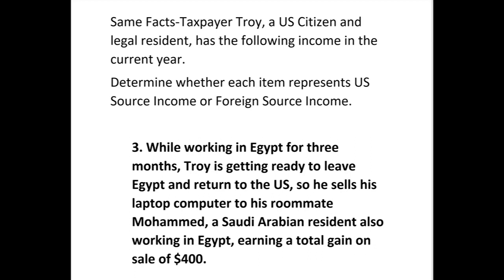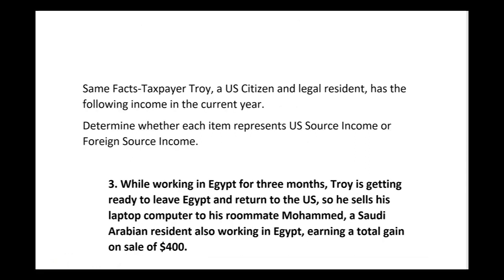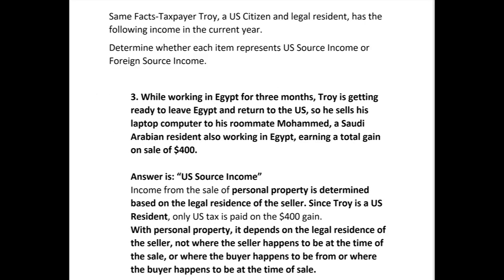Number three: while working in Egypt for three months, Troy is getting ready to leave and return to the US, so he sells his laptop to his roommate Mohammed, a Saudi Arabian resident also working in Egypt, earning a total gain on sale of $400. Since it's income from the sale of personal property, it's determined based on the legal residence of the seller. Since Troy is a US resident, only US tax will be paid on that $400 gain — just like number two. With personal property, it depends on the legal residence of the seller, not where the seller or buyer happens to be.